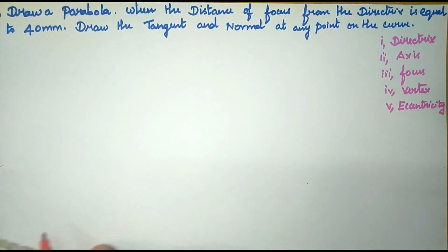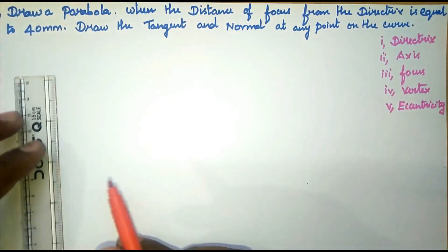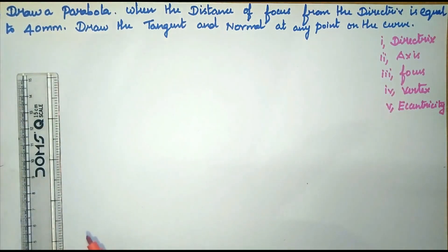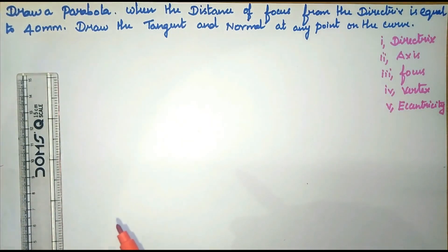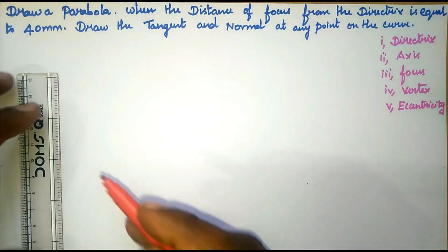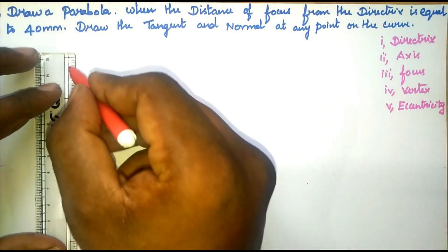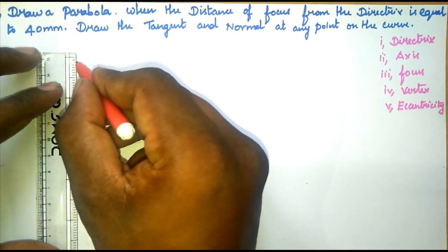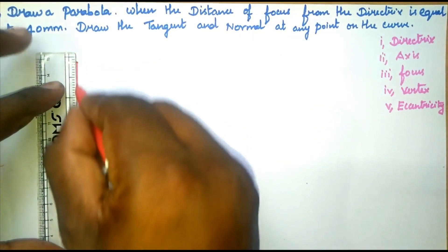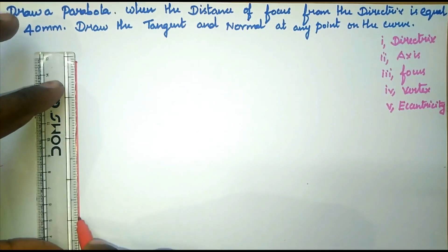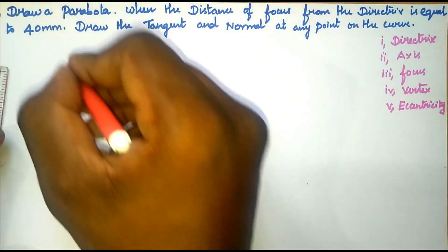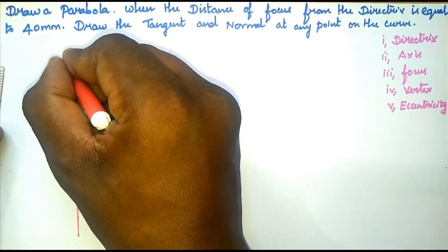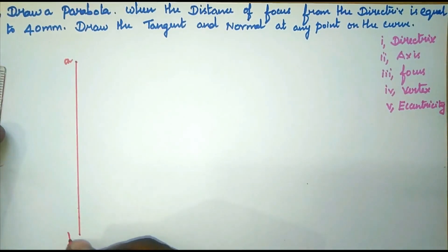First, the directrix — directrix is a fixed straight line. So we draw one vertical fixed straight line and name it as AB. The directrix line is done.